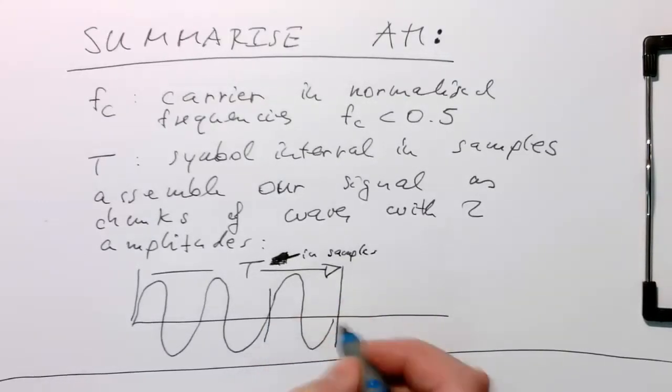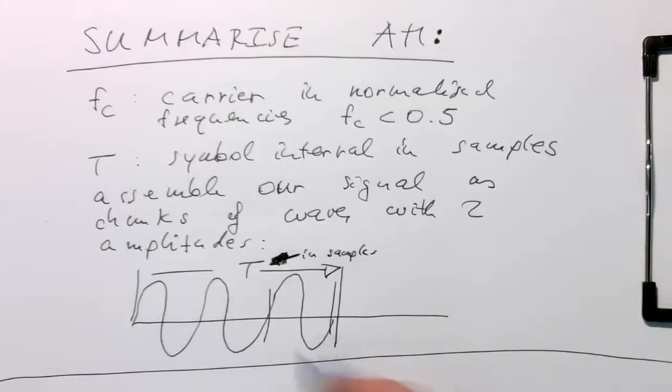And also here, the frequency of our carrier. So this one here, this is defined as 1 over Fc. That's our carrier frequency.